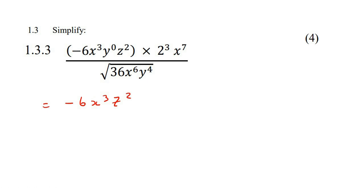That's my z squared. We could keep it in a bracket as well, and then 2³ and x⁷. Nothing we're going to change there.